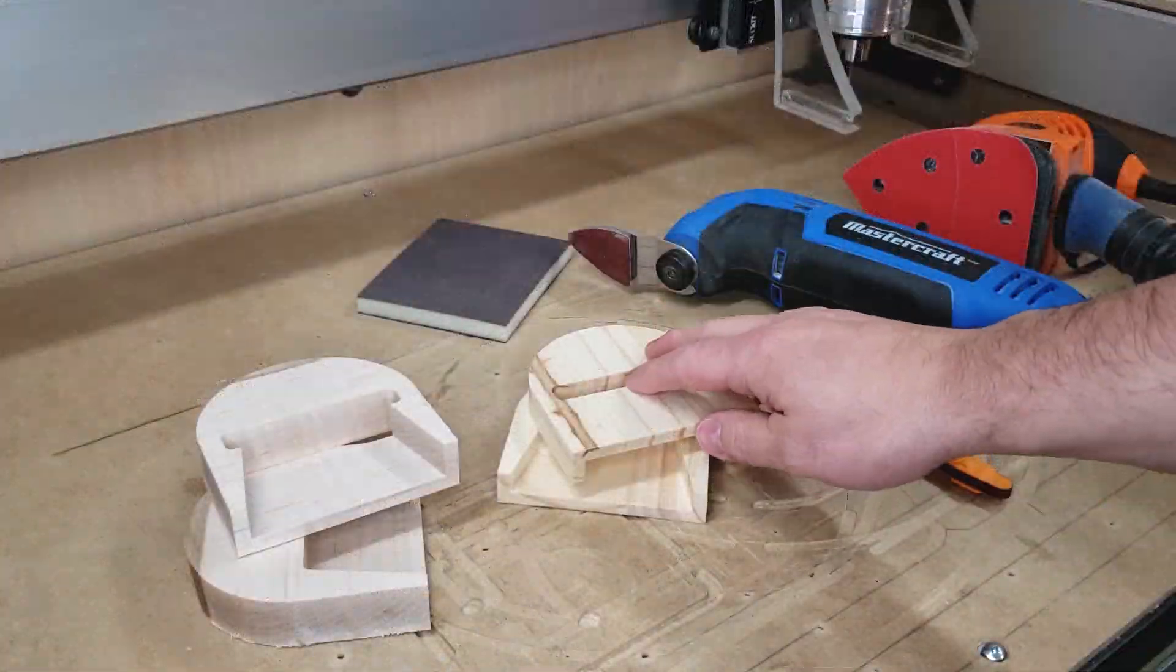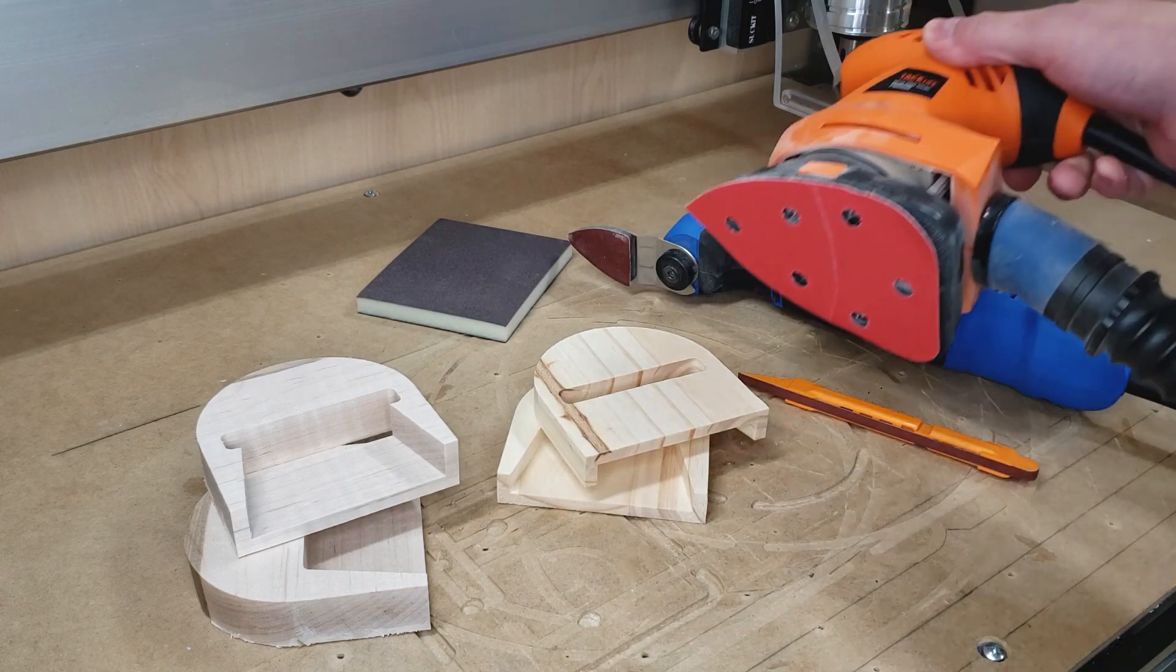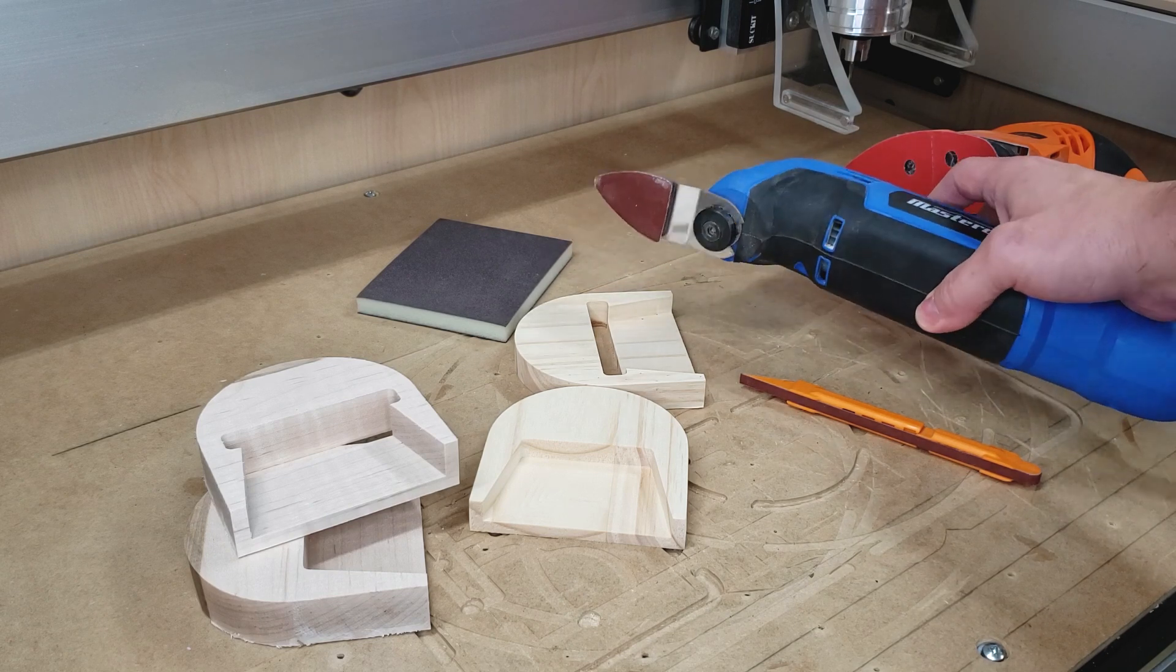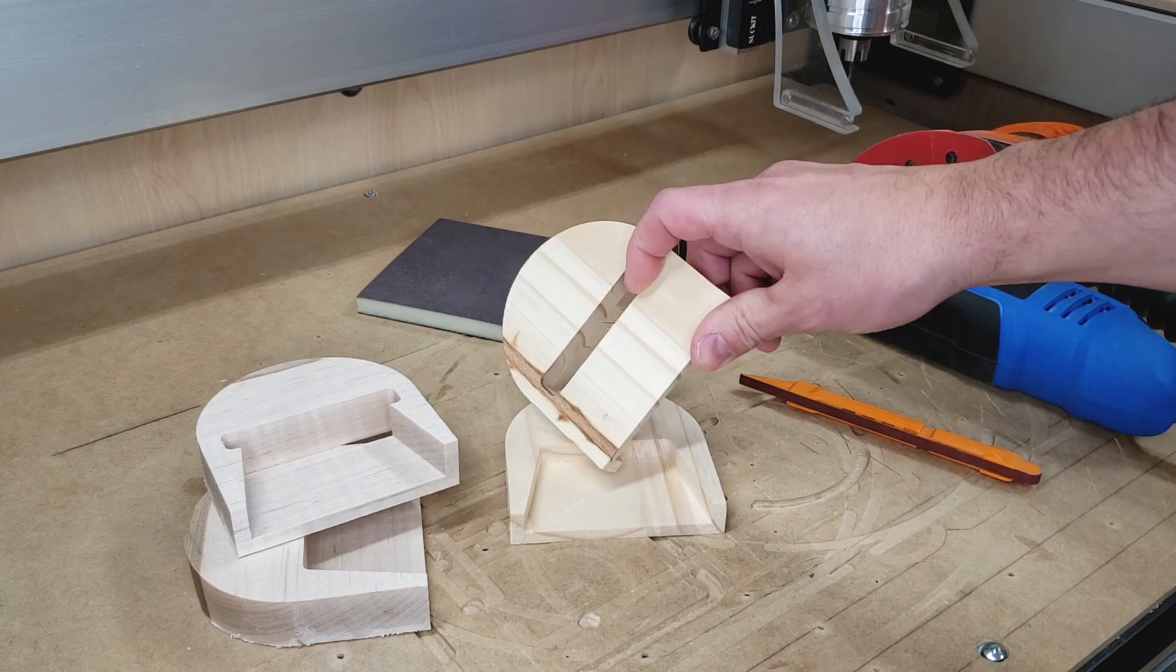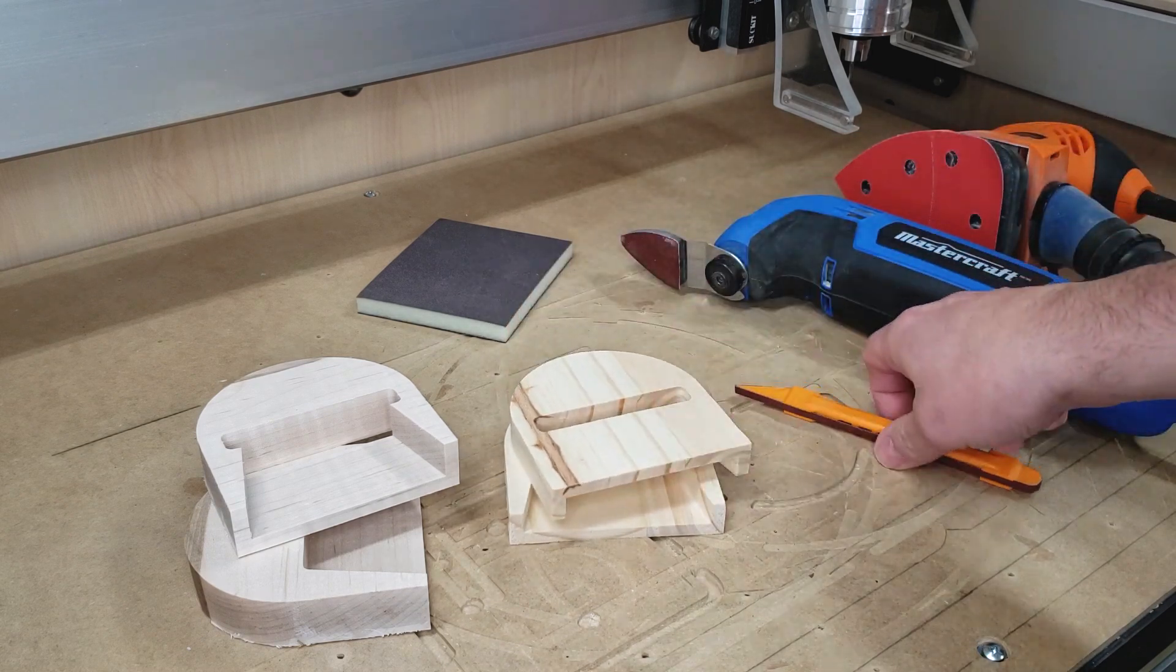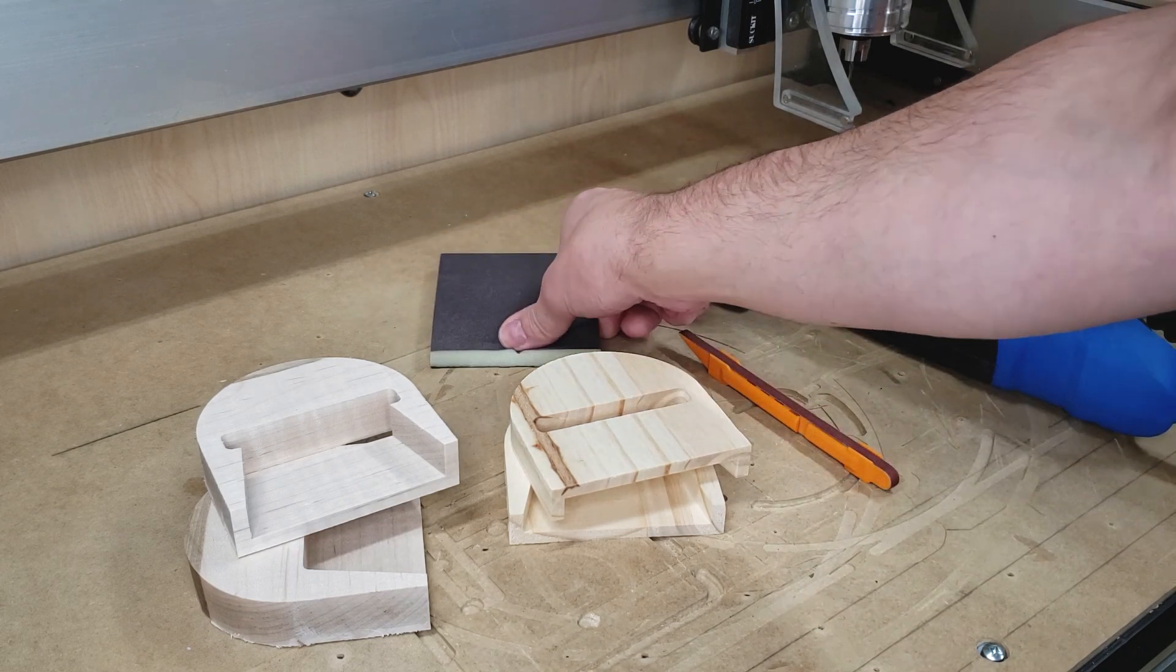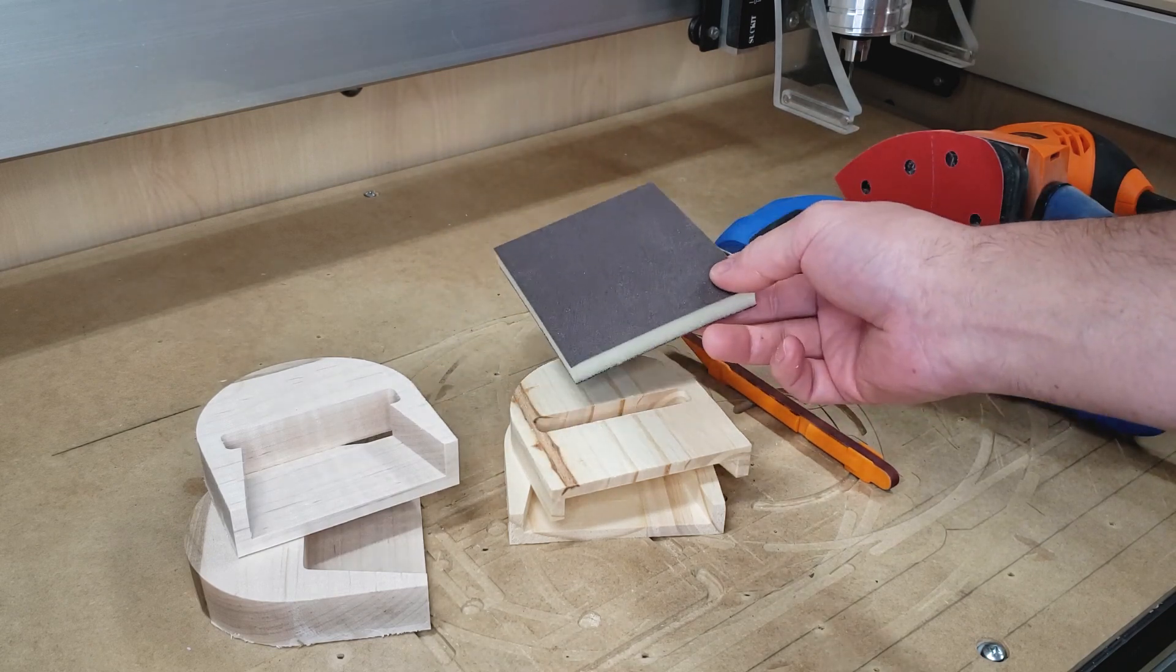Alright now that my project's been cut out I'm going to go ahead and sand it down. I'm going to be using my detail sander and a finger sander both loaded with pads that have 240 grit sandpaper on them. To get into any areas that I can't reach with my mechanical sanders I'll be using this little sanding stick. Of course if you don't have any detail sanders you can just go ahead and use a sanding pad to sand your project all down by hand.